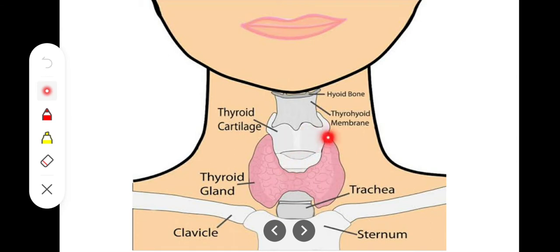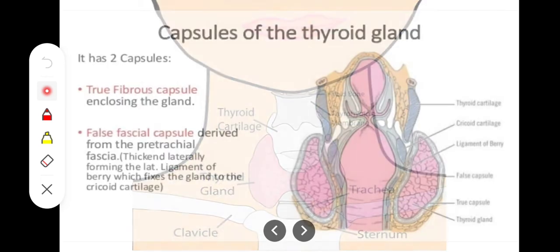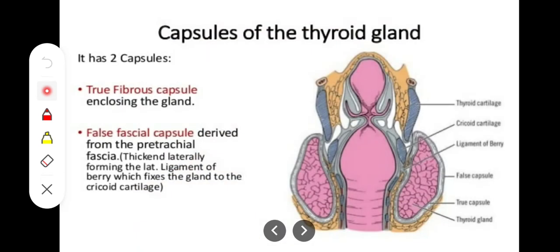Regarding its capsule, the thyroid gland has two categories: a true capsule and a false capsule. The true capsule is formed by the connective tissue of the gland itself, while the false capsule is formed by the condensation of the surrounding fascia.